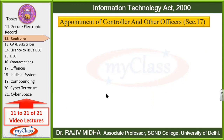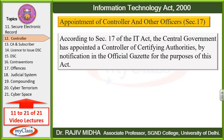Now the appointment of controller and other officers — Section 17. According to Section 17 of the IT Act, the Central Government has appointed a Controller of Certifying Authorities by notification in the Official Gazette for the purpose of this act. Central Government ne ek Controller of Certifying Authorities ko appoint kar diya aur is ki jaankari official Gazette ke andar notification ki form mein de di hai.